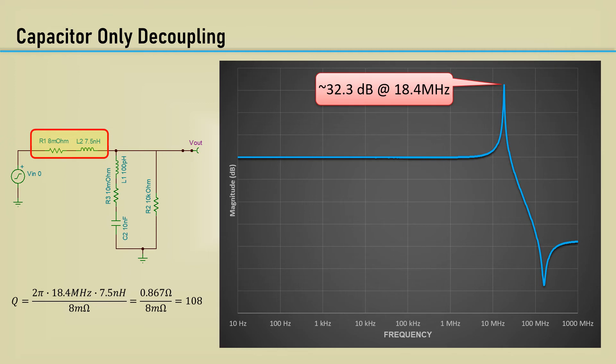It would be even worse if it weren't for that 10k load resistor. You can run, but you can't hide from inductance. By removing the 1 µH inductor, all we did was replace it with a smaller inductance — but a smaller inductance value with an even higher Q.